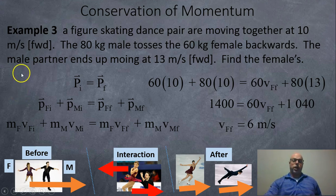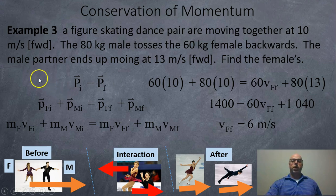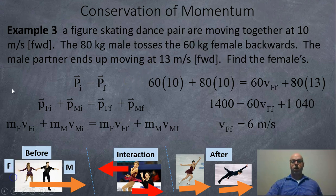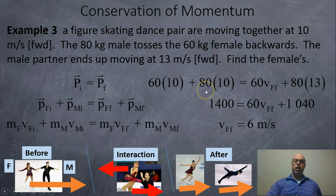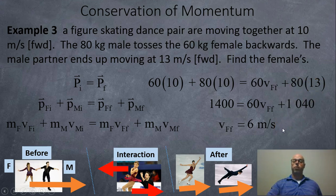Here's the third example: a skating couple starts as one object, then they throw each other and end up separated. The figure skater pair is moving at 10 meters per second forward together. The 80-kilogram male tosses the 60-kilogram female backwards, and the male ends up moving at 13 meters per second forward — find the female's final velocity. Using P_I = P_F with F for female and M for male: 60 × 10 + 80 × 10 = 60 × V_FF + 80 × 13. Solving, the female is still moving forward at 6 meters per second.